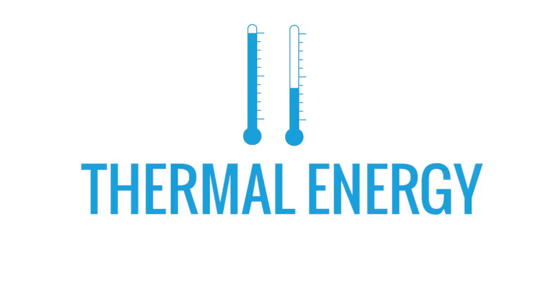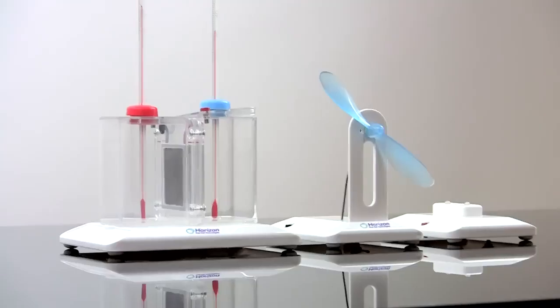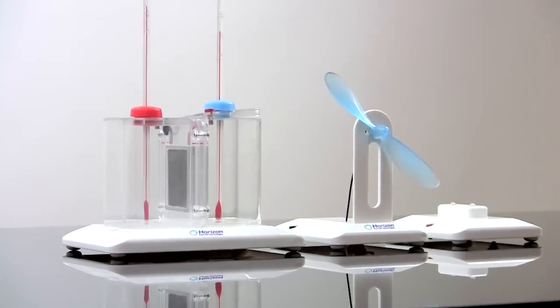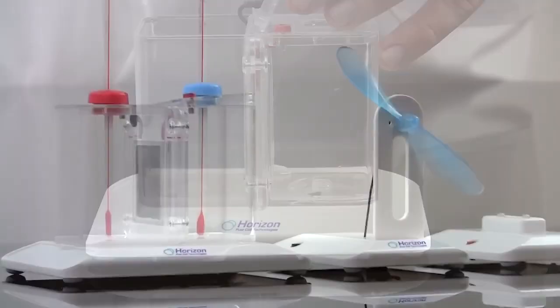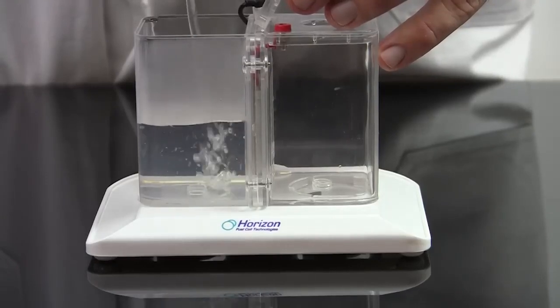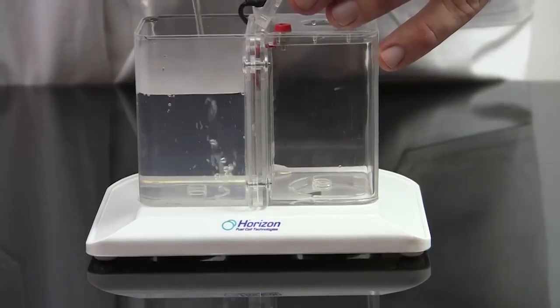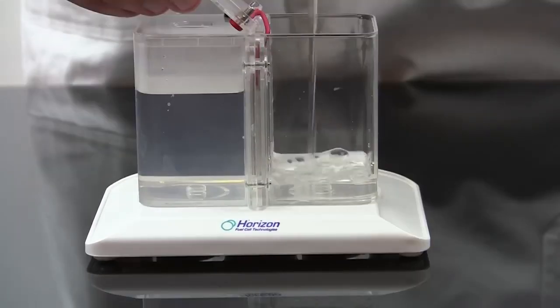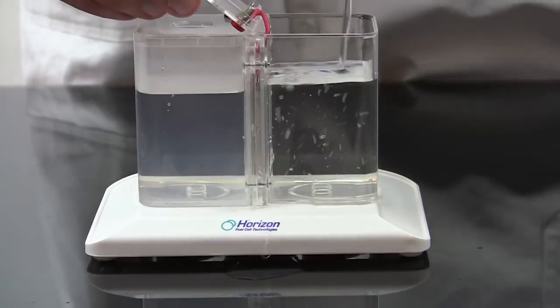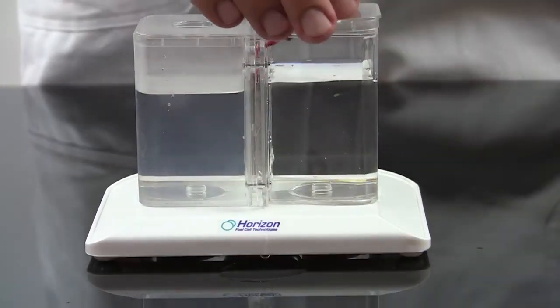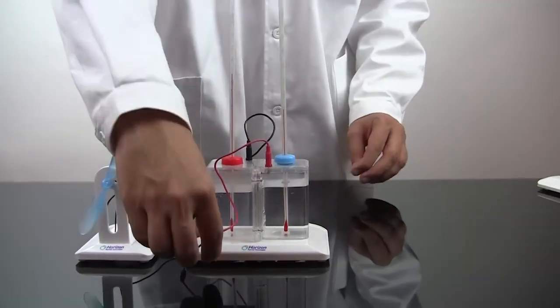The thermoelectric generator needs only hot and cold water to generate an electric current. Pour hot water into the side with the black wire contact and cold water into the red wire side. Students can measure the temperature of each side with the included thermometers. The bigger the temperature difference, the more current it creates.